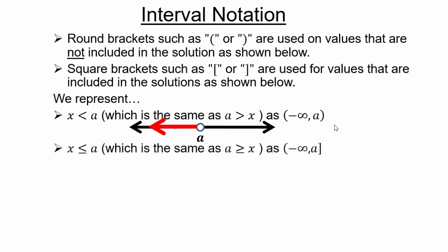Similarly, for x less than or equal to a: we keep going forever below a, but a is included. So the interval is written as negative infinity to a with a right square bracket, because a is included. Pictorially it's the same as the previous one, except a is now included.